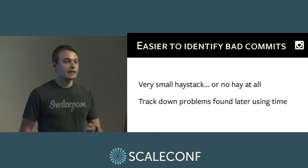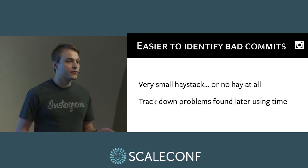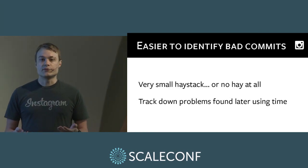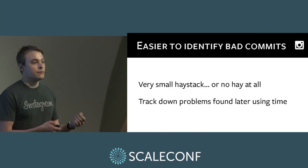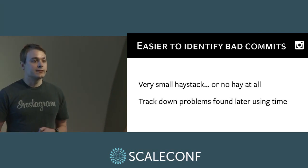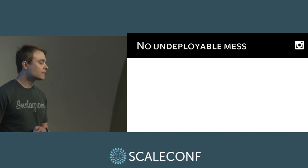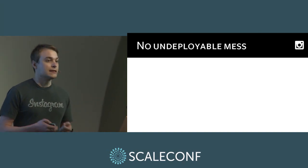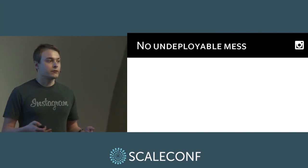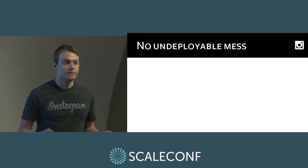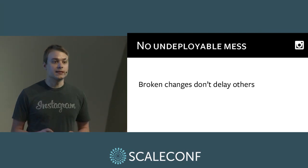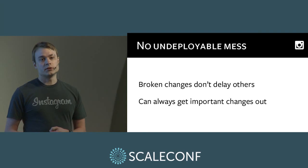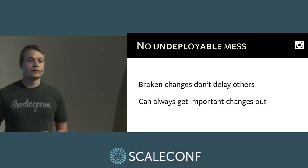This is also really useful for tracking down problems identified at a later stage. Sometimes we'll get a report that some functionality is broken, dig in and find a metric indicating this brokenness, identify when it started, then look at the rollouts that occurred around that time and know exactly the handful of diffs that went out. And thirdly, we're not left in an undeployable mess. When you've got a bunch of changes waiting in master and something is broken, nothing gets out until you figure out the broken change and back it out — which can get messy with merge conflicts. With continuous deployment, we don't get into this situation and we can always get important changes out.